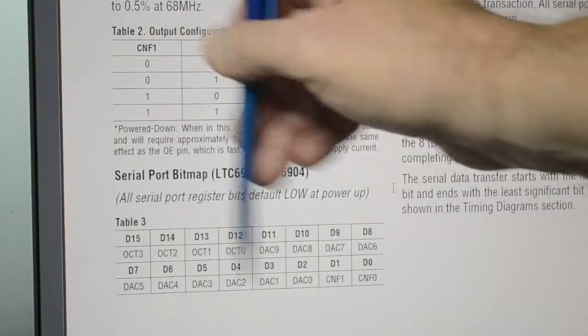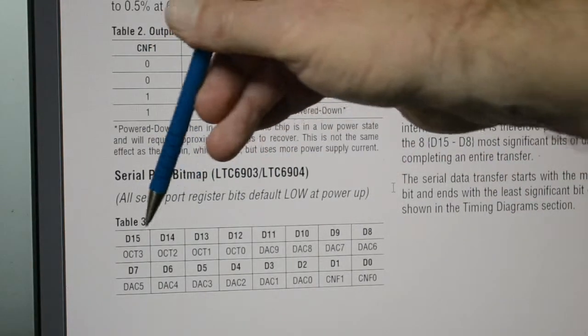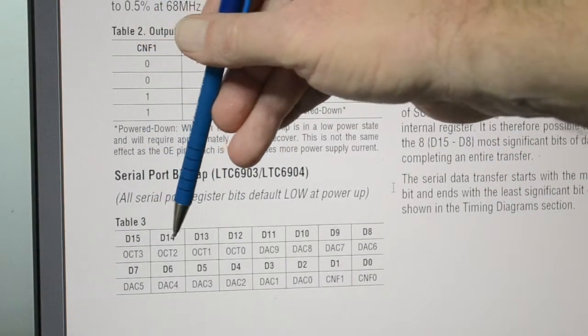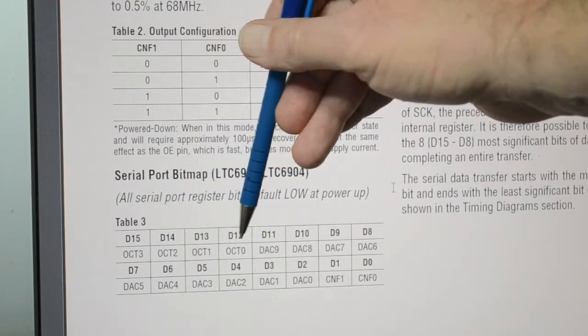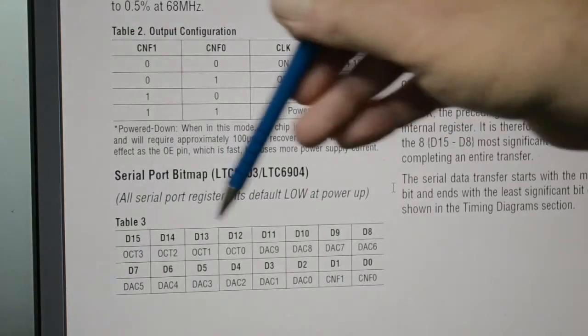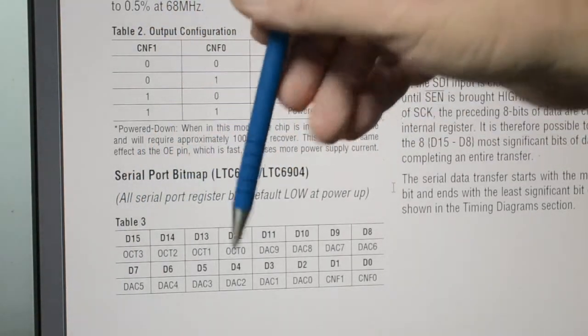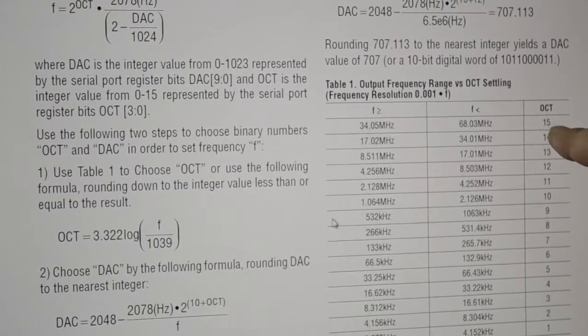So if we want octal 15, we want an 8, and a 4, and a 2, and a 1. So that would be 1, 1, 1, 1. So 4 1s give us octal 15, give us our starting frequency at 34 megs.